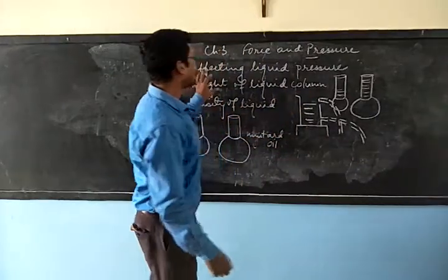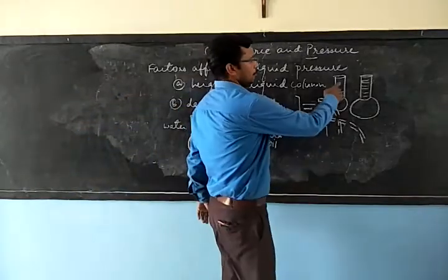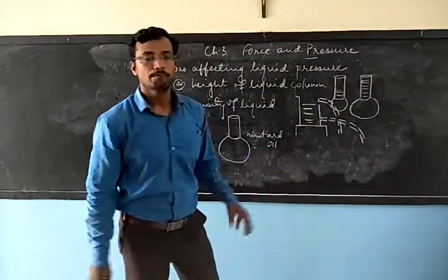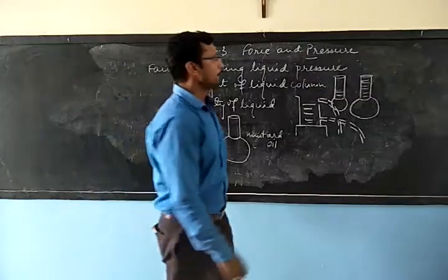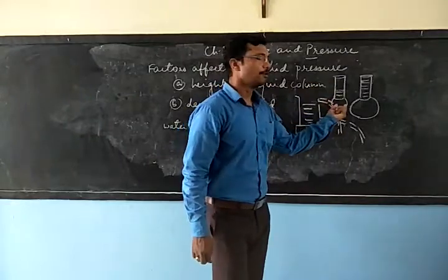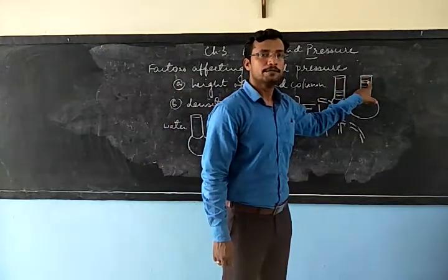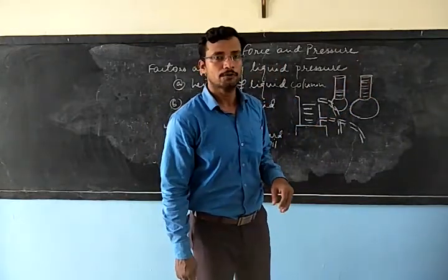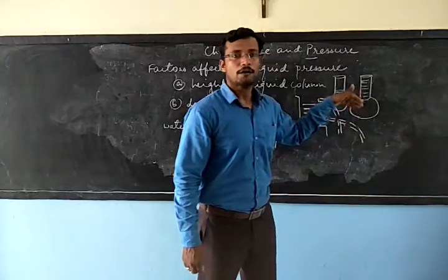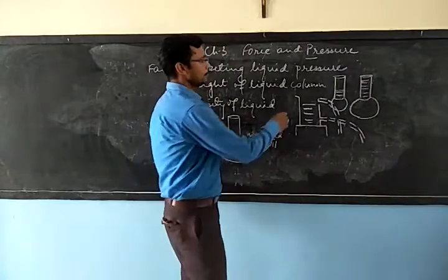You can see how the height of the liquid column increases the pressure. We have taken two tubes filled with water and fixed a balloon at the bottom. When the height of the liquid is low, we find a small bulging in the balloon, but the moment we increase the height by pouring more water, the bulging is more, indicating that more pressure is being exerted on the balloon.